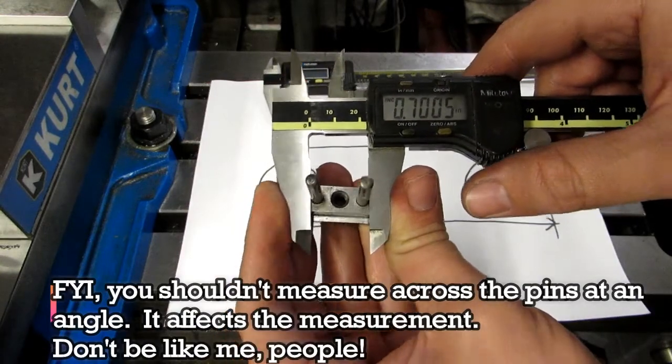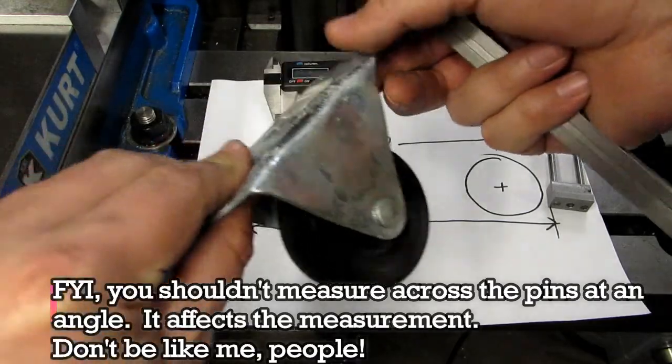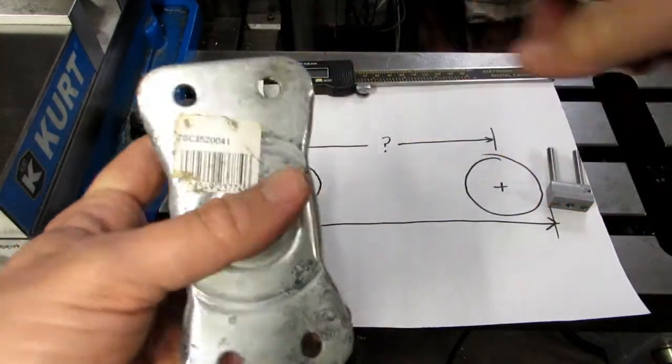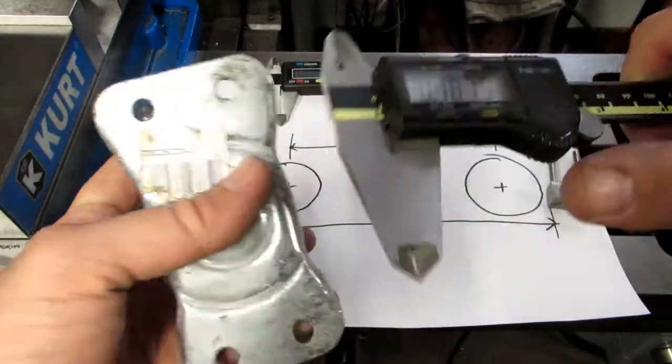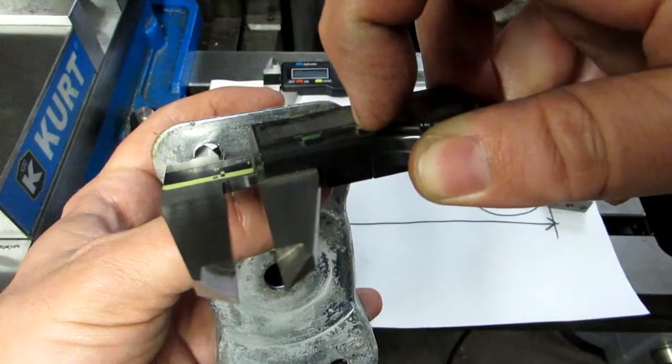And it works with holes too. So let's say you wanted to bolt this caster to a plate and you needed to make that adapter. You can zero on the hole just like you did before.